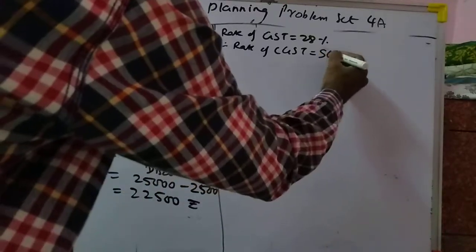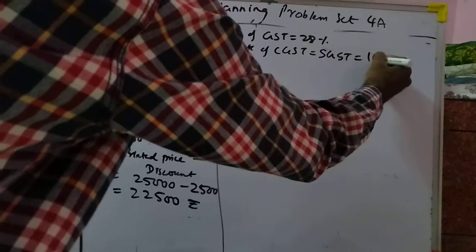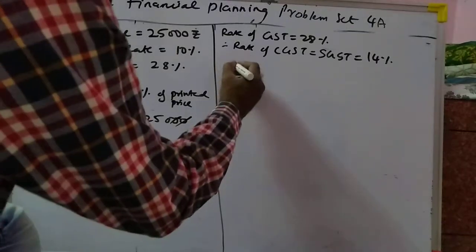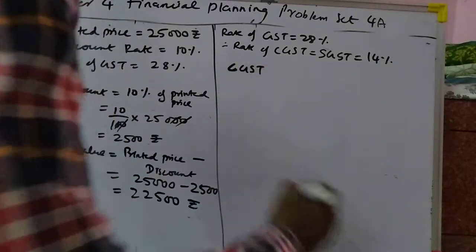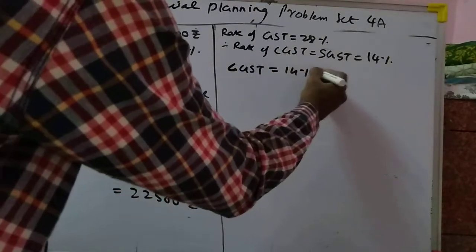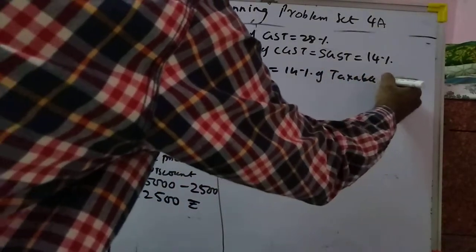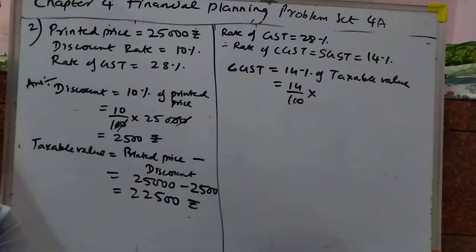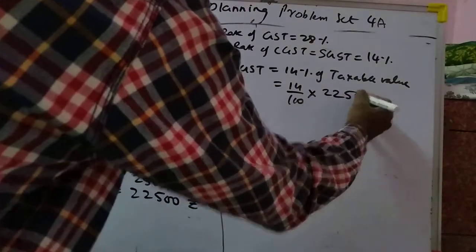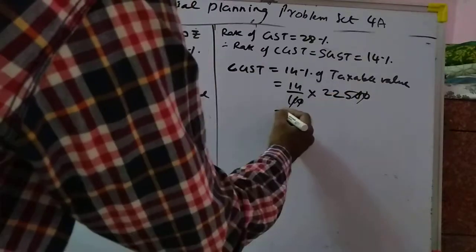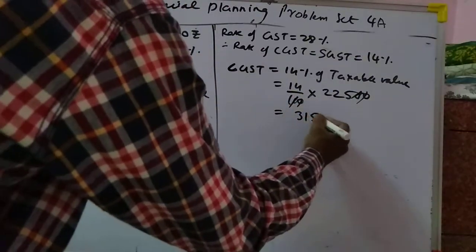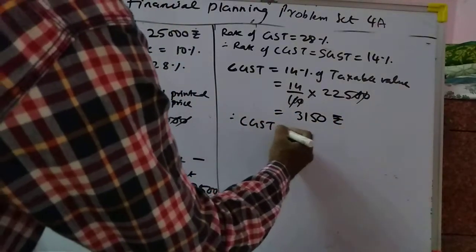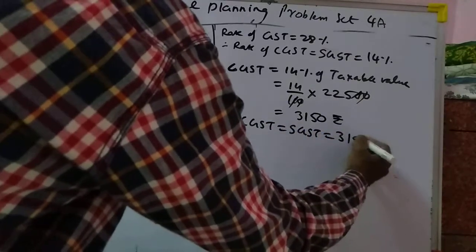GST is equal to 14% of taxable value, so 14 upon 100 into 22,500. You can cut the zeros and multiply to get 3,150 rupees. Therefore CGST is equal to SGST, that is 3,150 rupees each.